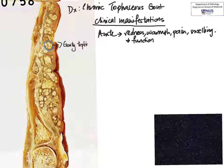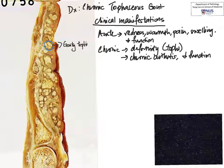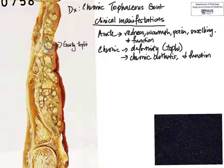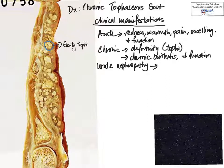Moving on to the chronic clinical picture: there can be chronic arthritis, loss of function, as well as deformity due to the actual tophi. In addition, we must also remember that because gout is essentially a systemic disease, this can also result in deposits in other organs — for example, in the kidney — and the resulting disease would be called uric nephropathy. This can result in uric acid stones and renal stones, which can have clinical signs of very painful colic, and can also eventually lead to renal failure.